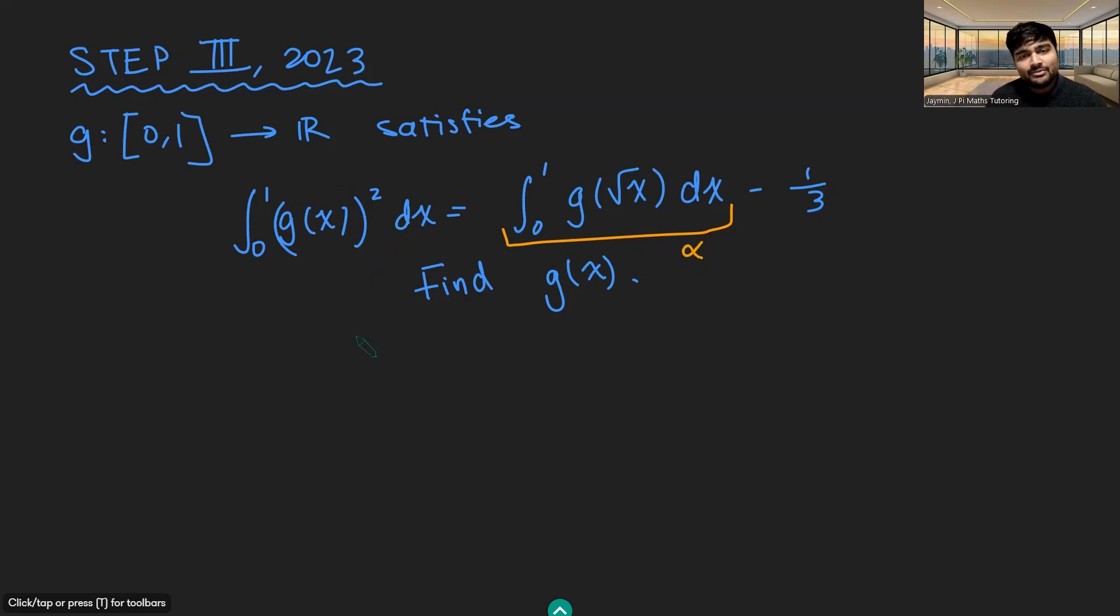Let me call this integral here α. We're going to do a substitution. We say u equals √x, and so we get du is 1/(2√x) dx. And so this integral α just becomes the integral from, well when x is 0, u is going to be the square root of 0, which is 0. And when x is 1, u will be the square root of 1, which is 1.